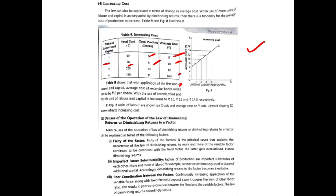Next are the causes of the operation of the law of diminishing return. First is fixity of the factor: when more and more variable factors are applied along with a fixed factor, the fixed factor becomes over-utilized. Beyond a certain point, marginal product starts to decrease.